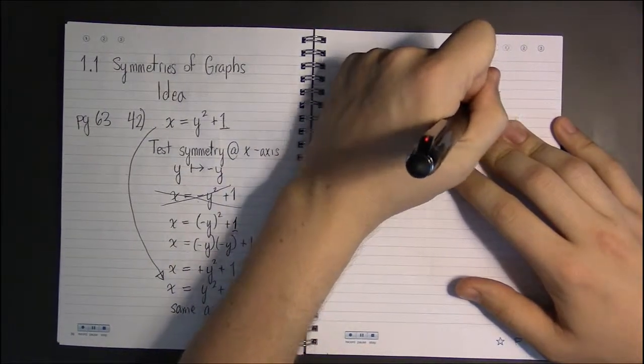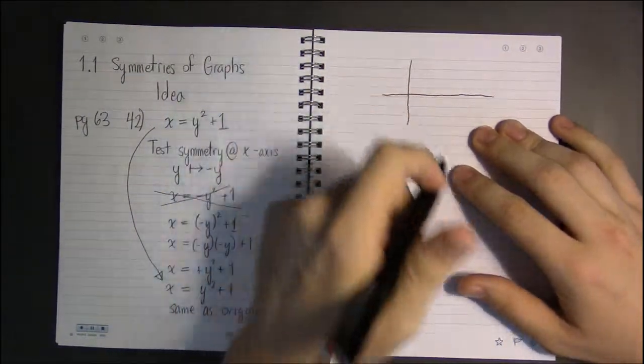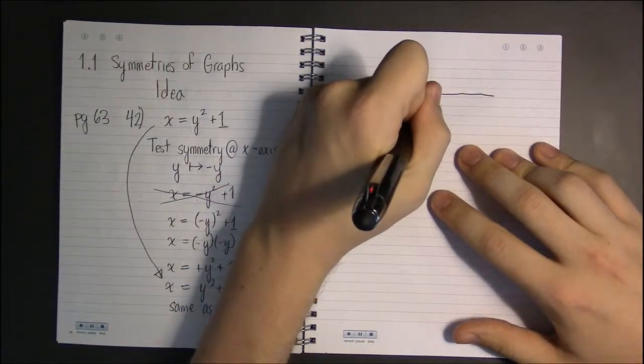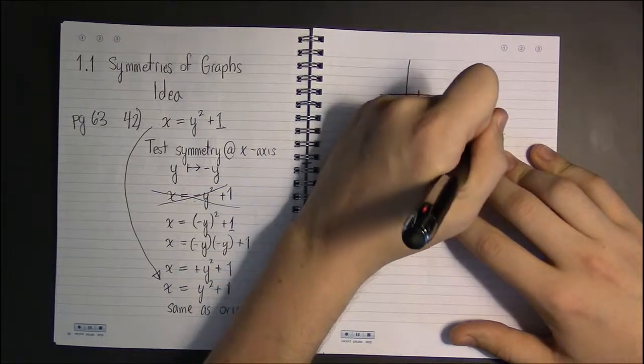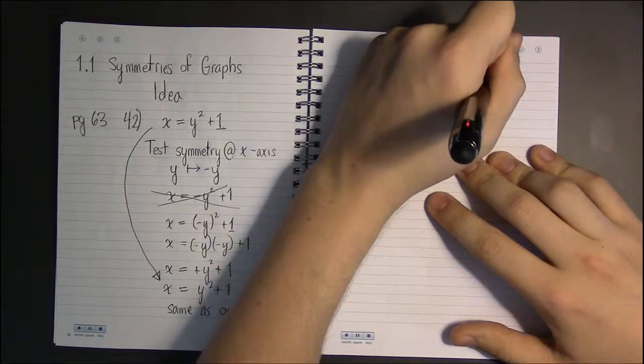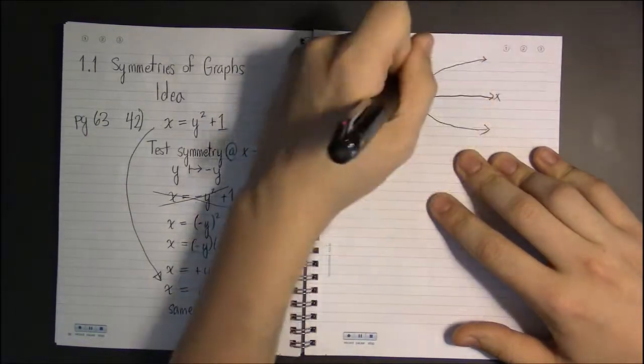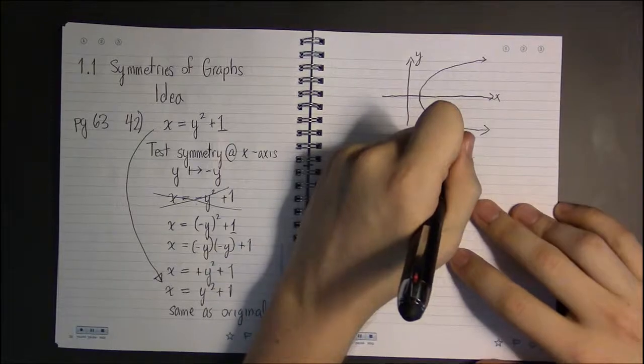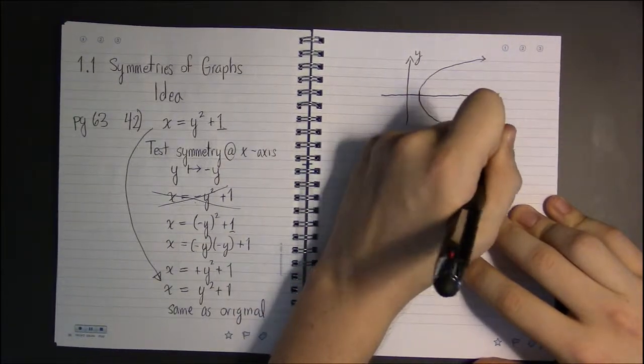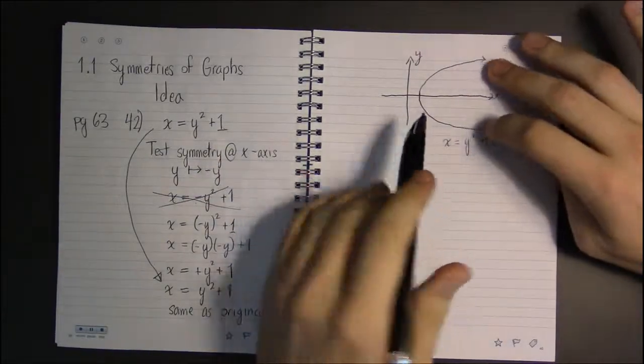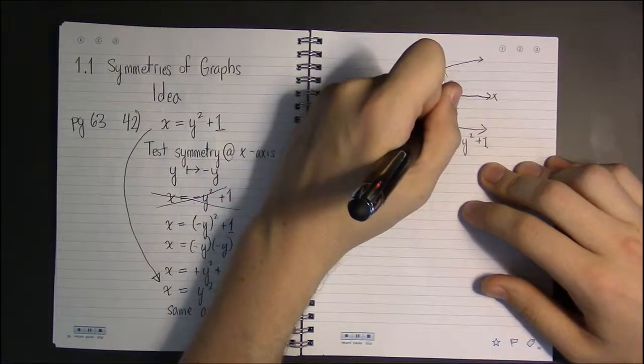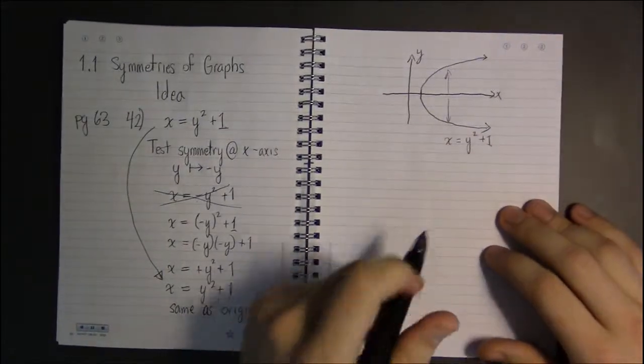is another parabola turned on its side. This is x equals y squared plus one. Symmetry with respect to the x-axis just means that the top half looks exactly the same as the bottom half.